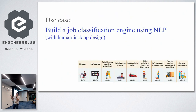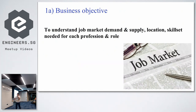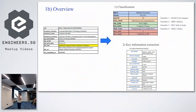Let me share a use case: building a job classifier engine using NLP for one of Malaysia's labor market agencies, with a human-in-the-loop design. Most systems we talked about are pure machine learning, but here we introduced the human in the loop to facilitate and support the output. The business objective was to understand current job market demand, supply, and the needs for each professional role. We scraped data from JobMalaysia, JobStreet, Indeed, and others to get all the job post data — company info, industry, company summary, and job descriptions.